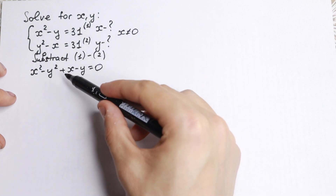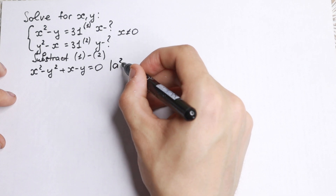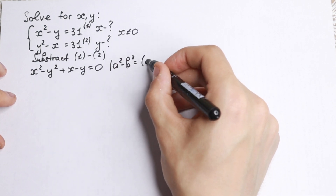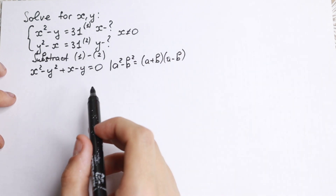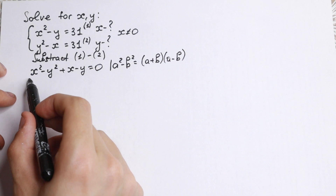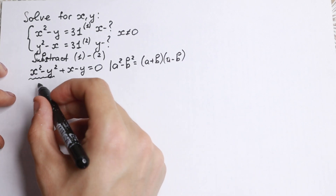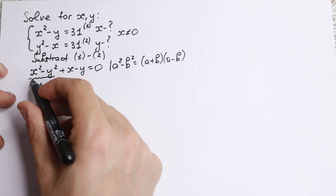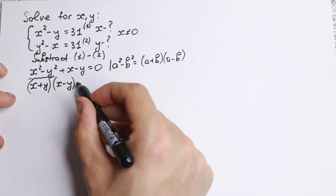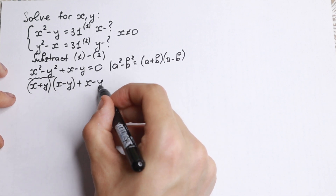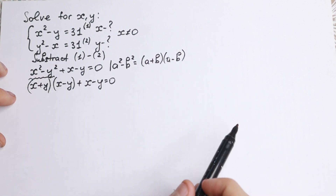This is the subtraction of the first and second equations. Why is that good for us? Because we know the identity a squared minus b squared equals (a + b)(a − b). We can easily apply this identity to x squared minus y squared. So let's use this identity right here.